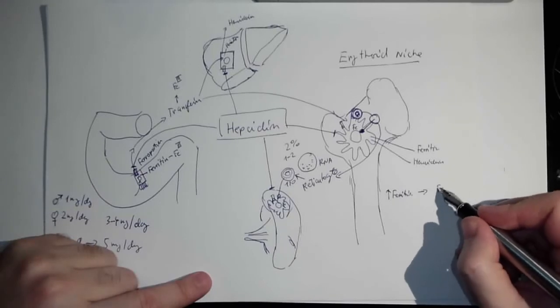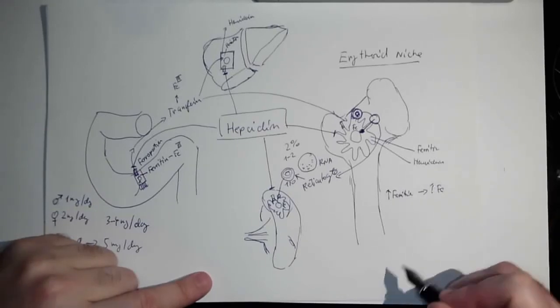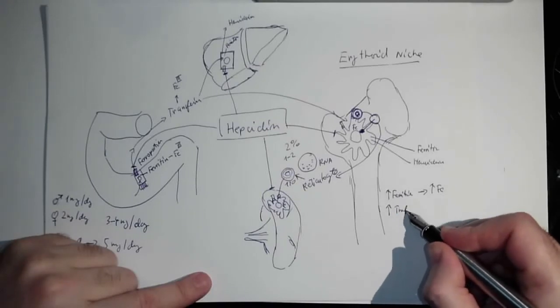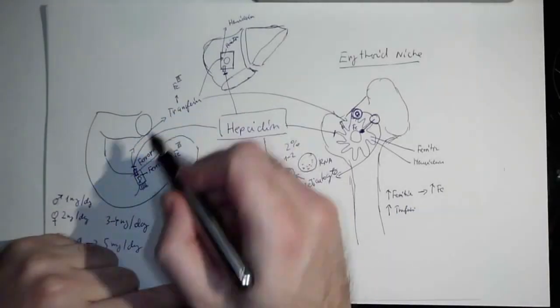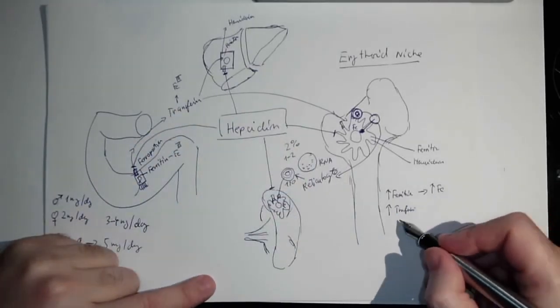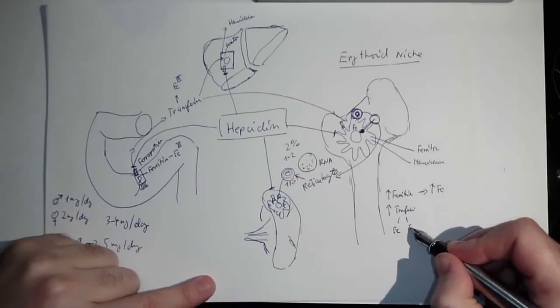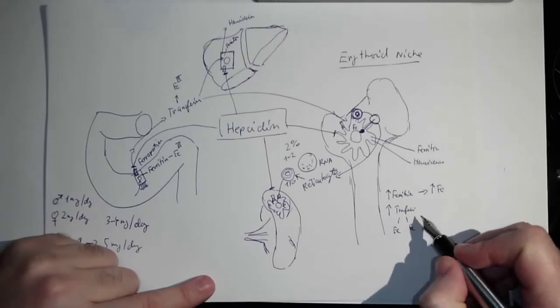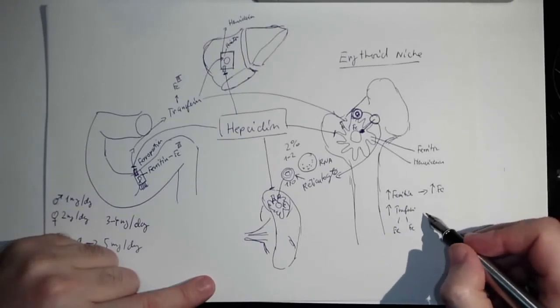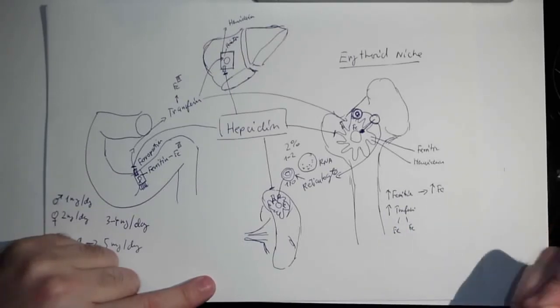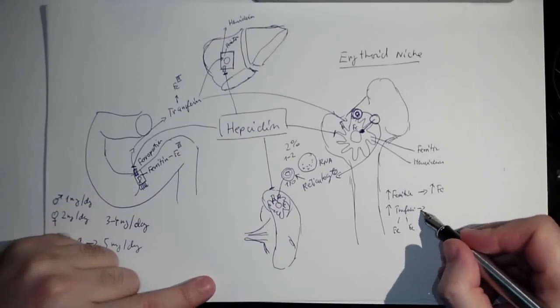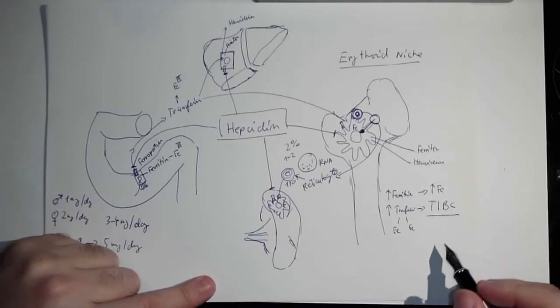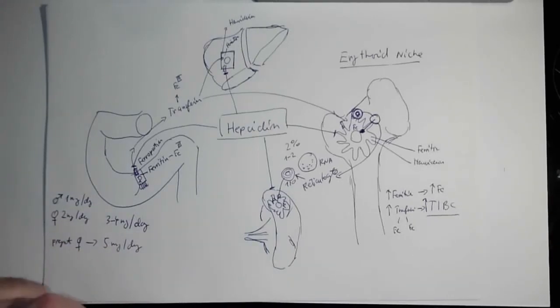In contrast to this, if we have increased levels of transferrin—this is the transfer molecule—typically it has two seats for the iron. So if there is high transferrin, it means that the body is hungry for iron, it wants iron. Even better is we call it total iron binding capacity. That means if it is increased, that means there are many empty seats for iron and that the body wants iron.